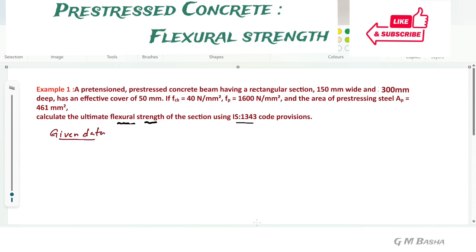A pretensioned prestressed concrete beam having a rectangular section, b equal to 150 mm and depth equal to 300 mm, has an effective cover. Cover is also given but maybe sometimes it won't be useful to solve the model. We will see the formula. fck will be 40 newton per mm square. We know what is fck - characteristic compressive strength of concrete. And fp is the characteristic tensile strength of prestressing steel, not concrete. And what about Ap? Area of the prestressing steel, that is 461 mm square.